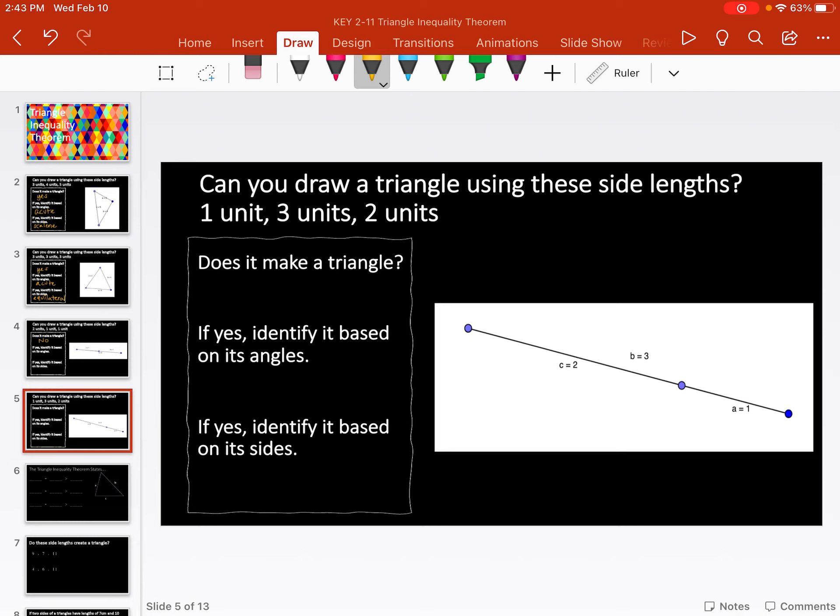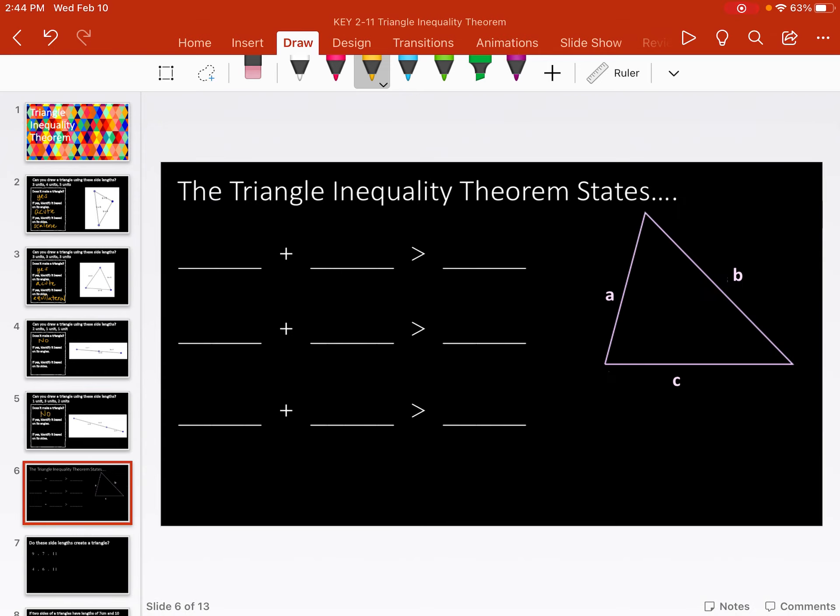Same idea with this one. We've got a 1, 3, 2. So we have the longest length there, the 3. And then when we had this 1 and this 2 go until they touched, they were the same length as the whole long line. So there was not enough length on the two shorter sides for them to touch before they got flattened onto the original line. So no, it does not make a triangle.